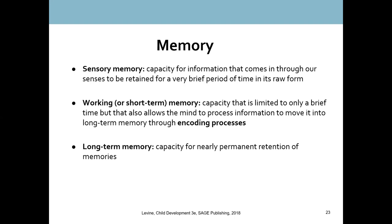The capacity of working or short-term memory is limited — you can hold on average up to about seven different items at one time. You can't hold a lot of different thoughts or concepts simultaneously. When you engage in encoding processes — sometimes called deep processing — you move information into long-term memory, where you can remember it the next day, the next year, or perhaps for the rest of your life.